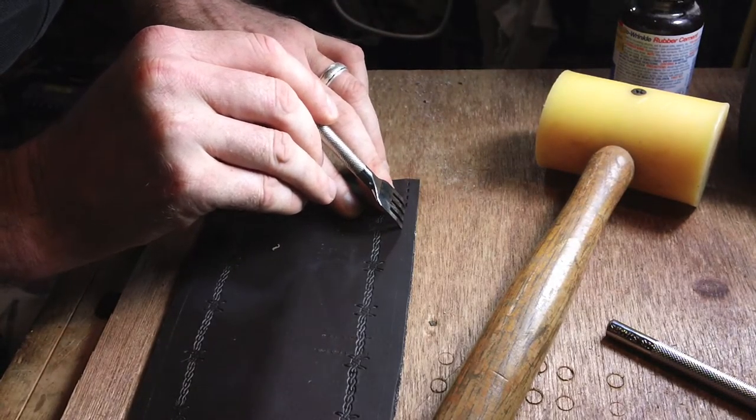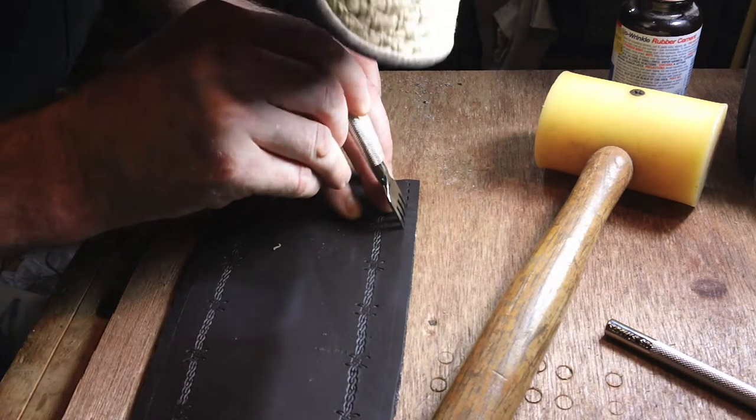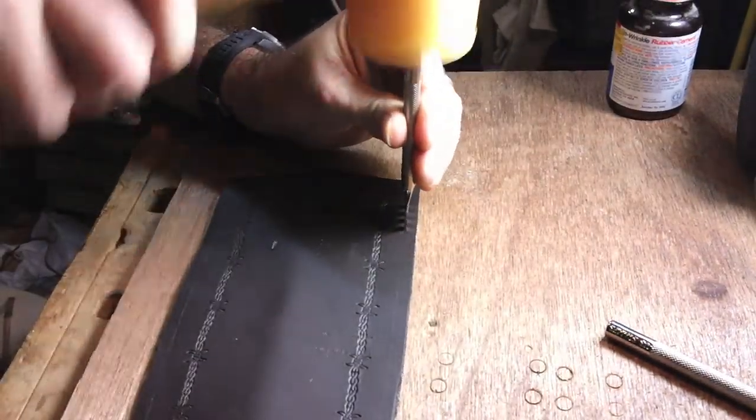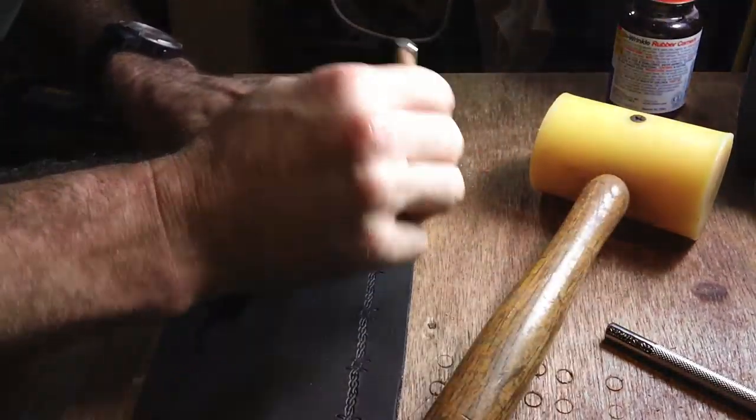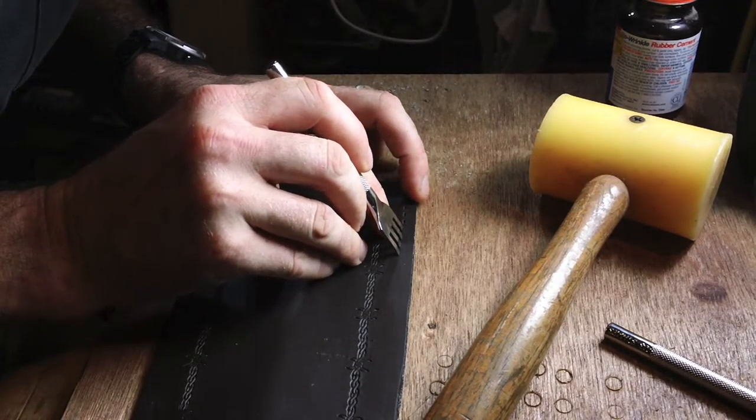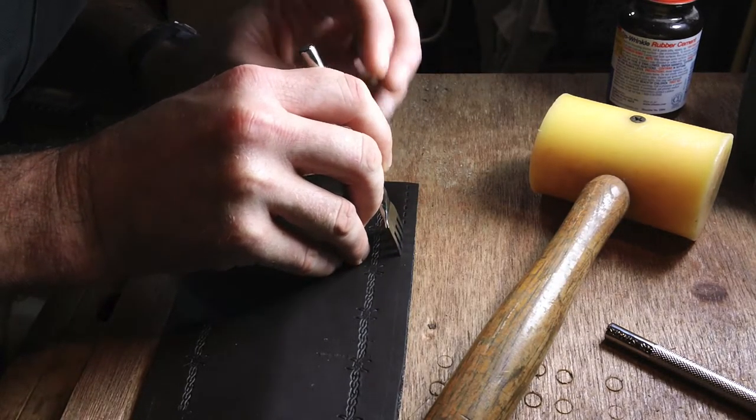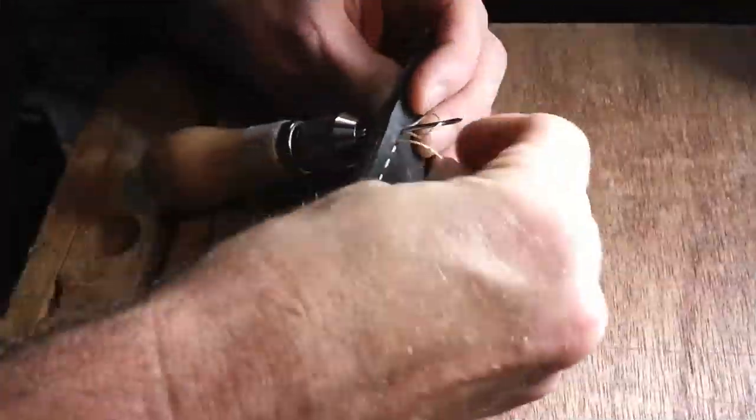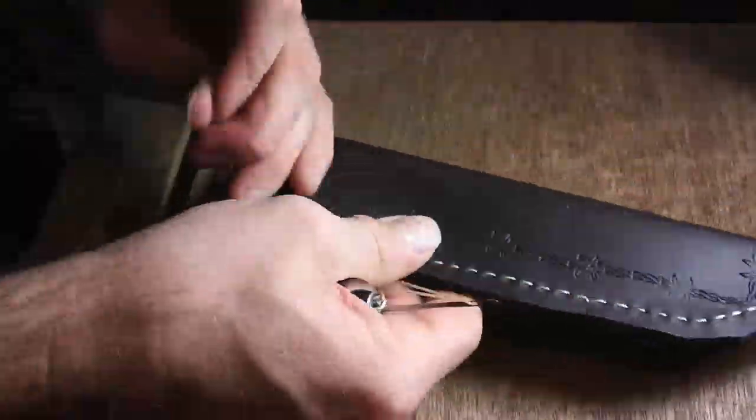I don't think I've showed you this before, but we're going to go with a little fork. I've already pounded it in one tine. It's easy to use because you put the first tine in the last hole made to make your mark, and you move on down. That way your spacing stays even. Easy peasy.